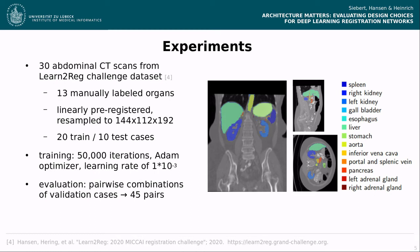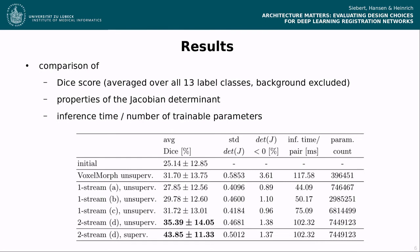For our experiments, we use the Learn-to-React challenge dataset containing 30 abdominal CT scans with 13 manually labeled abdominal organs. The data has been linearly pre-registered and we resample the data to dimensions of 144 × 112 × 192 to reduce computational complexity. The dataset is split into 20 training cases and 10 test cases, and we consider all possible pairwise combinations of the test cases, leading to 45 unique pairs. We train our networks using Adam with a learning rate of 10⁻³ for 50,000 iterations. We compare the average Dice overlap, properties of the Jacobian determinant, inference time on GPU, and the number of trainable parameters.